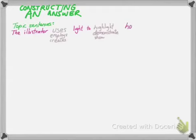And then explain the point that you're making. The illustrator uses light to highlight how there is hope on the horizon for this character. The illustrator employs light to demonstrate how there is hope on the horizon for this character. And then you would go on to explain.